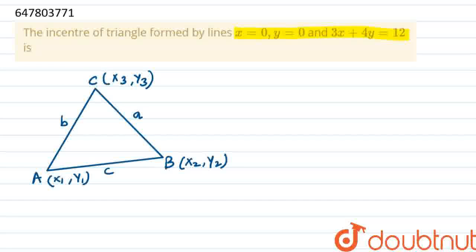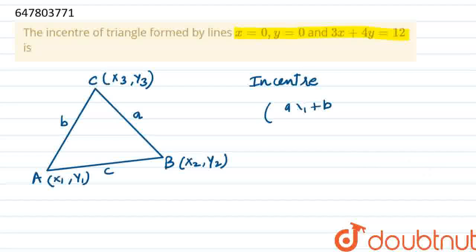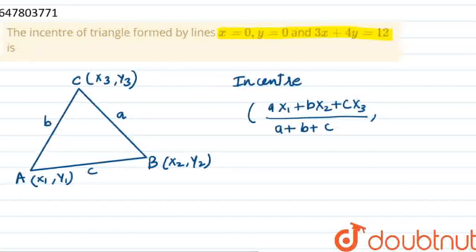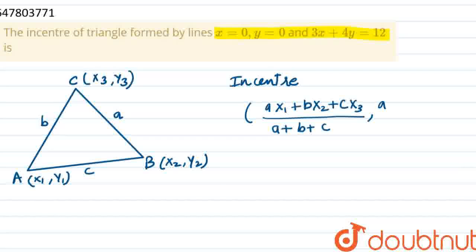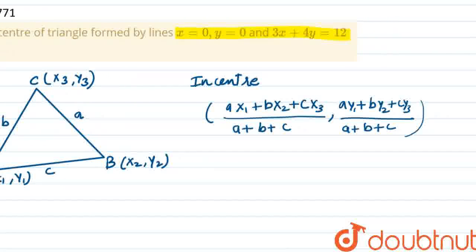So all opposite sides will be named the same in small letters — this is small a. So the opposite side length value is small a. The incenter formula for the coordinates is: (a·x1 + b·x2 + c·x3) / (a + b + c) for the x-coordinate, and (a·y1 + b·y2 + c·y3) / (a + b + c) for the y-coordinate.